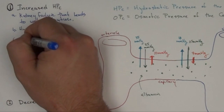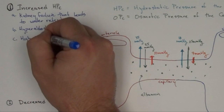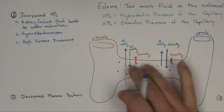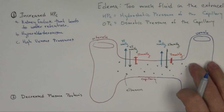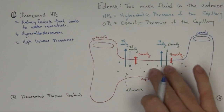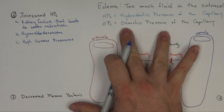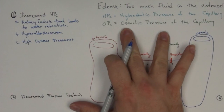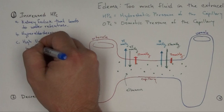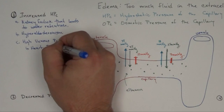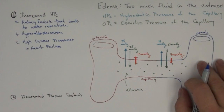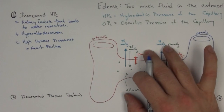High venous pressures are another cause. Fluid has to flow through and out, and if anything is blocking the vein, pressure builds back up into the capillary and forces fluid out, causing edema. Heart failure is a key example — the heart can't push the fluid along enough, it starts backing up in the veins, and again that backs up into the capillaries.